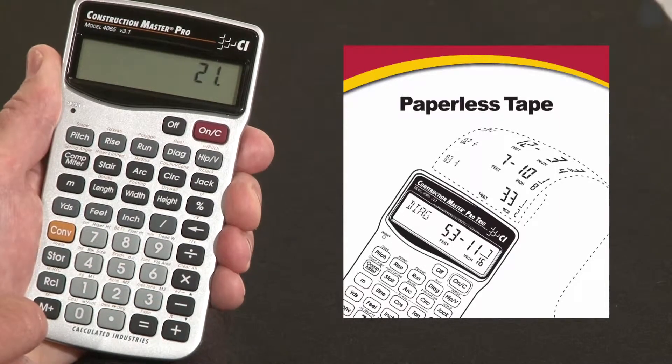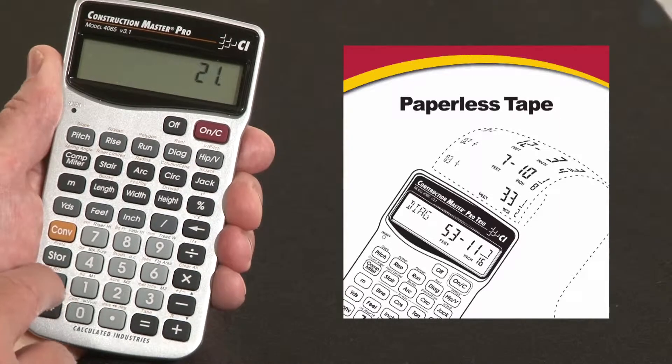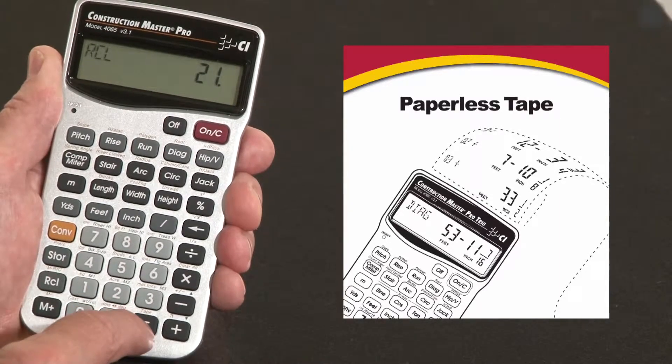That may be the total, maybe I'm not sure. One way to find out without re-entering everything is to recall our entries. So we hit recall, and over the equal key it says tape.